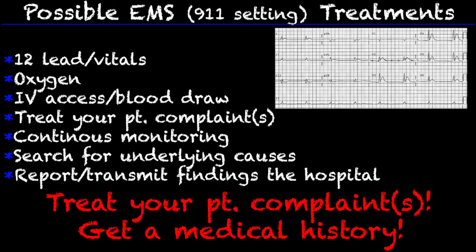Possible EMS treatments for hypercalcemia in the 911 EMS setting — to be honest, most likely we're not going to know that a patient is hypercalcemic. So basically routine treatments: 12 lead, vitals. If you're lucky enough to catch the hypercalcemia on the strip, definitely report your findings to the hospital. Oxygen, IV access, and then just treating your patient's complaint — that is the most important thing.